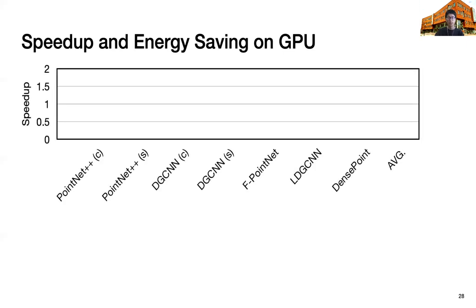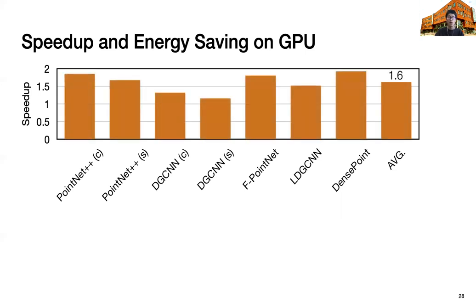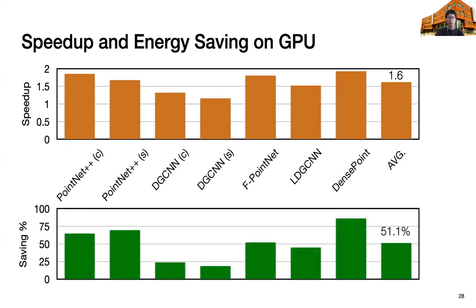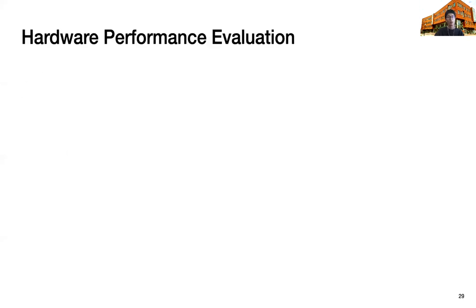Next, we will show the speedup and energy saving on the off-the-shelf mobile GPU, NVIDIA TX2. Notice that the result here doesn't have our new hardware support. We first show the speedup. The x-axis shows different networks, and y-axis shows speedup. On average, we can achieve 1.6 times speedup. Next, we will show the energy saving. On average, we can achieve 51% of energy saving.